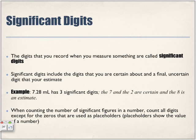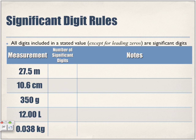For a number like 1 million, all those zeros are placeholders that show us the value. If we take away those zeros, the value changes — so they are placeholders to show the value of a number. The significant digits rule: all digits included in a stated value, except for leading zeros at the beginning, or trailing zeros like in 1,000,000, or leading zeros like in 0.0005, are not considered significant.